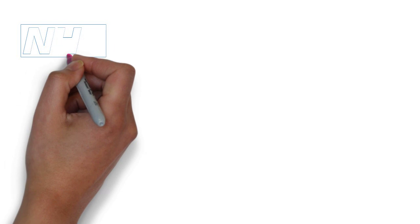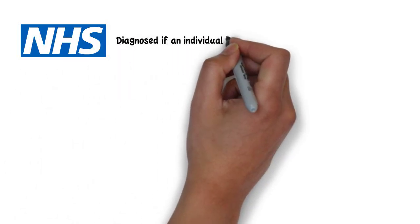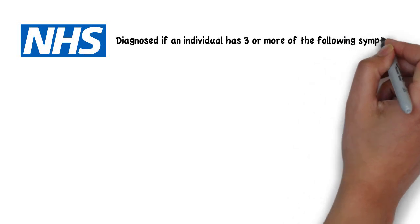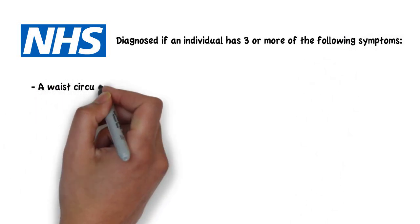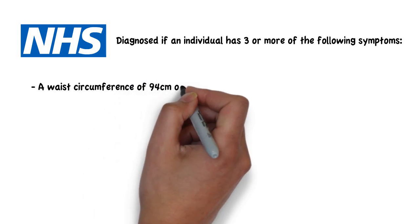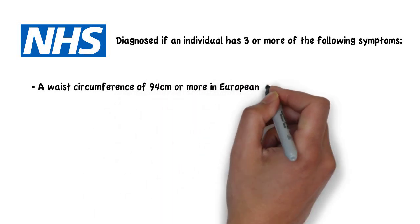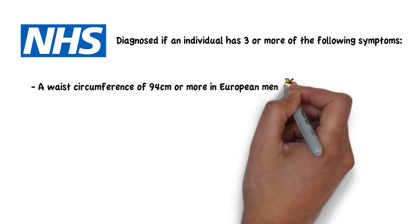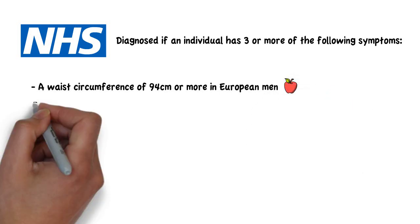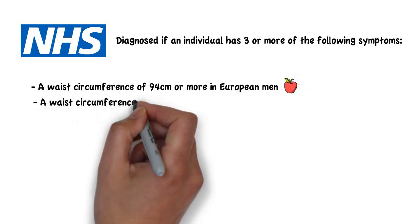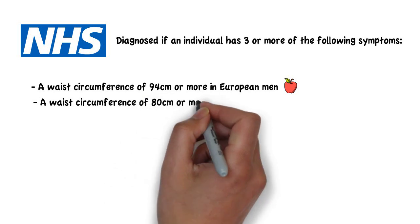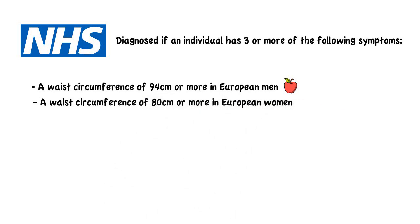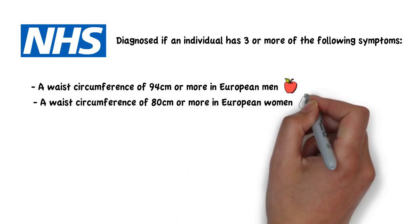According to the NHS, metabolic syndrome can be diagnosed if an individual has three or more of the following symptoms. A waist circumference of 94 centimeters or more in European men, who tend to present an apple-shaped body, or 80 centimeters or more in European women, who tend to present with a pear-shaped body.